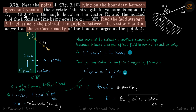We have a point lying on the boundary between glass and vacuum. The electric field just outside is E naught, making an angle alpha naught with the normal of the dielectric surface. We need to find the field strength just inside the glass surface and the angle it makes with the same normal, and also calculate the surface density of the bound charges at this point.